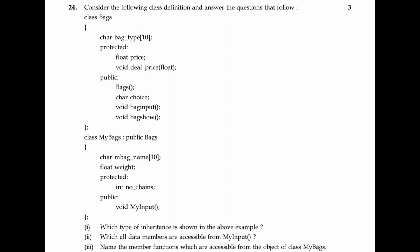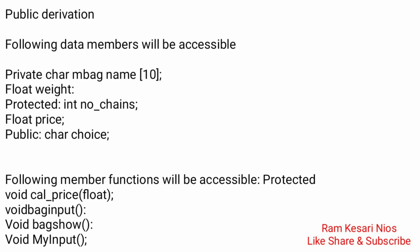Question 24: Consider the following class definition and answer the questions. 1) Which type of inheritance is shown? — Public derivation (multiple inheritance). 2) Which data members are accessible from the myInput function? — private char M_bag[10], float Weight, protected int NumberOfChains, float price, public char Choice. 3) Name the member functions accessible from the object of class myBags — protected void CallPrice(float), void BagInput(), void BagShow(), void MyInput().